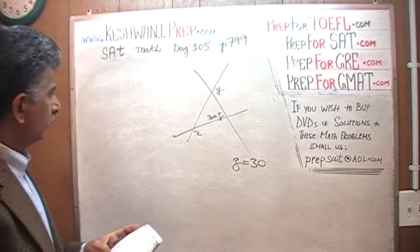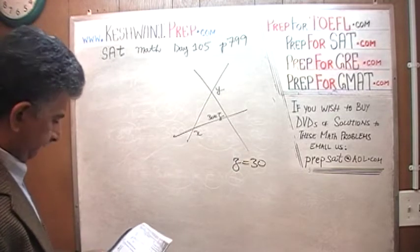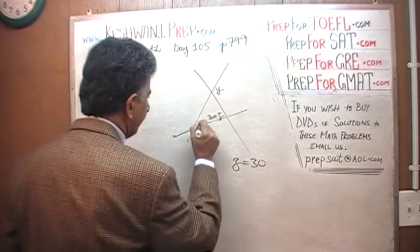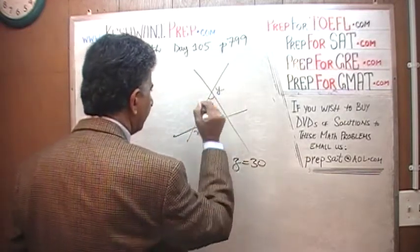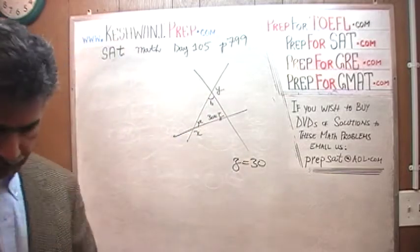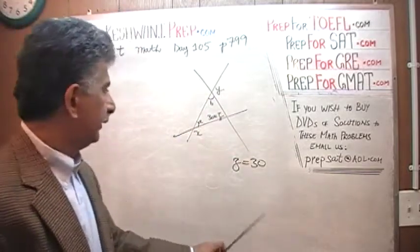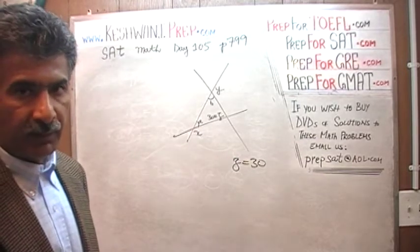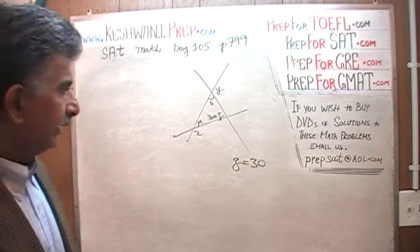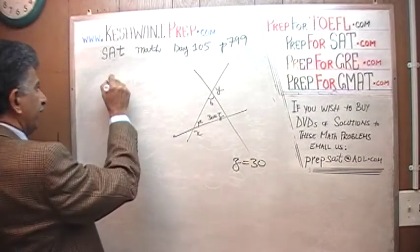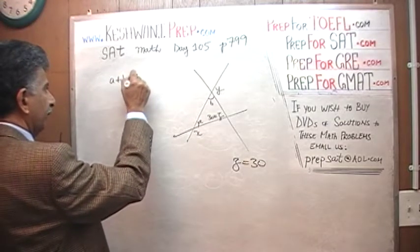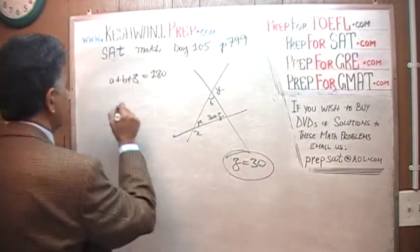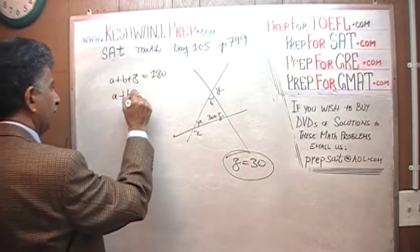Let's call these angles A and B. If angle Z is 30 and we know that the sum of angles in any triangle equals 180, then A plus B plus Z must equal 180. Since Z is 30, A plus B must be 150.